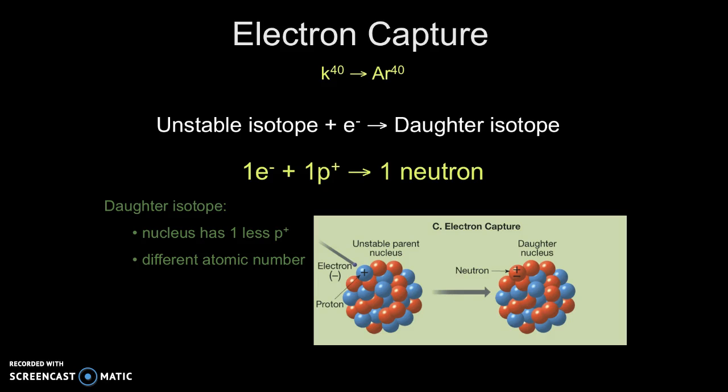The daughter isotope now has one less proton and a different atomic number. One example of electron capture is the decay of potassium-40 into argon-40. That's just one example.